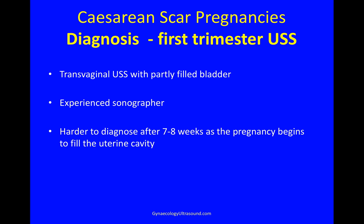You can diagnose a caesarean scar pregnancy in the first trimester using transvaginal ultrasound. It's best if the patient has a partly filled bladder, and you need some experience to diagnose these. It becomes much harder to diagnose a scar pregnancy after around seven or eight weeks, as the pregnancy then begins to fill the uterine cavity and it's harder to see where it's implanted.